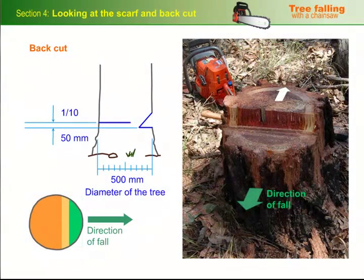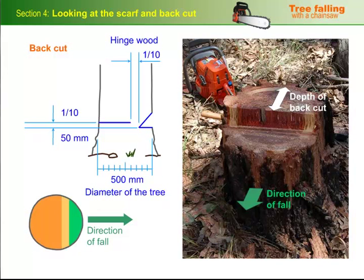In general, the depth of the back cut should allow the width of the hinge wood to be one tenth of the tree's diameter. Again, on a 500mm tree, this will be 50mm.